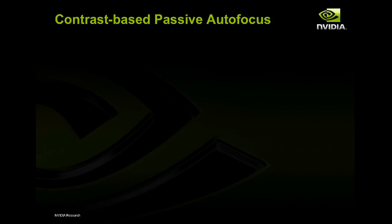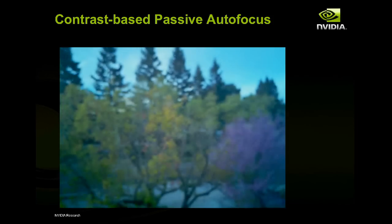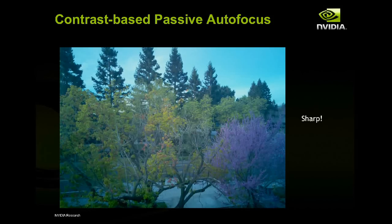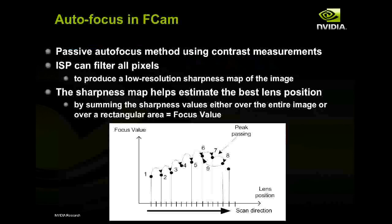Finally there's the autofocus algorithm. It basically works by trying different focal settings — you move the lens and analyze the sharpness of the image. We measure sharpness by taking differences of neighboring pixels: if it's sharp, the differences are likely to be bigger than if it's blurred, where neighboring pixels have very similar intensity values.